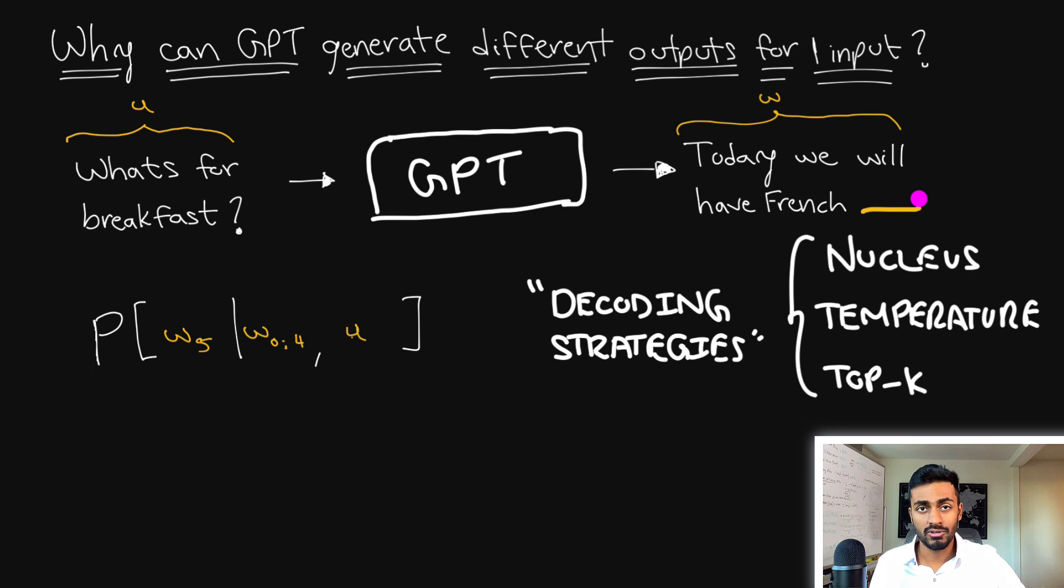Typically in machine learning models, if there is an output with the highest probability value, it will just output whatever that value is. But that's not exactly what we want in a language model, because had we done that, for the same input we would always generate the same exact output every single time. If toast is the highest probability word, we will always say 'today we will have French toast' for this same input. But this isn't exactly human behavior - humans tend to say words that are not the most optimal at every single word that we speak. To circumvent this, we use decoding strategies to make the decisions more stochastic and more human-like.